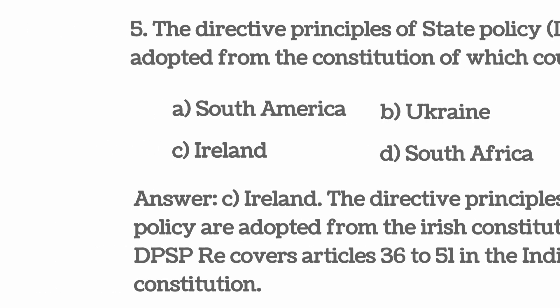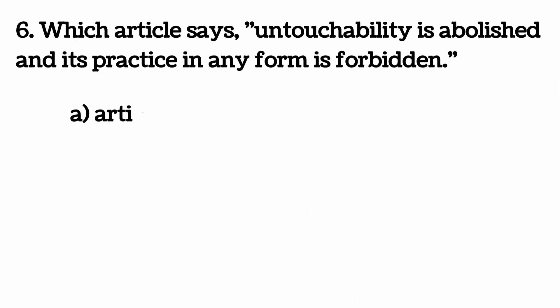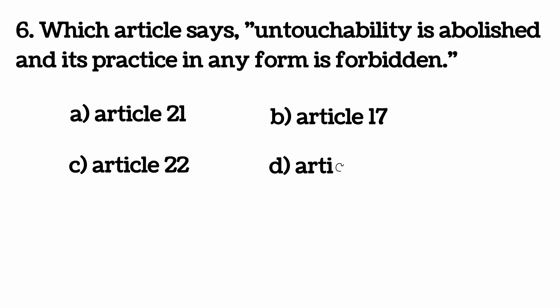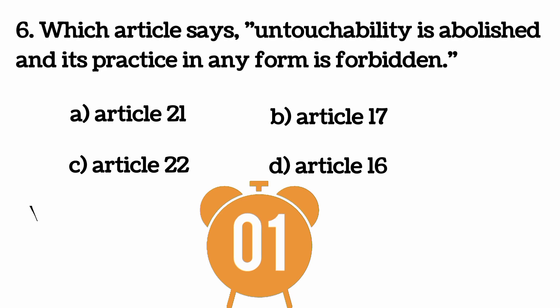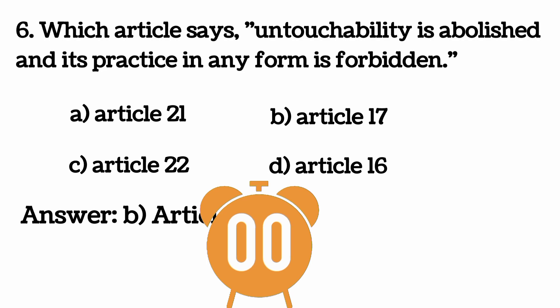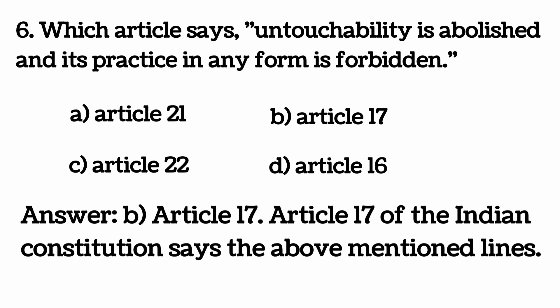Which article says untouchability is abolished and its practice in any form is forbidden? Answer B: Article 17. Article 17 of the Indian constitution states the above mentioned lines.